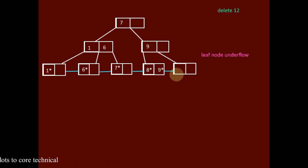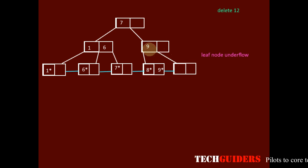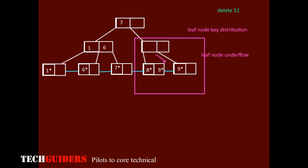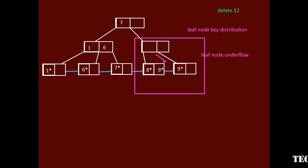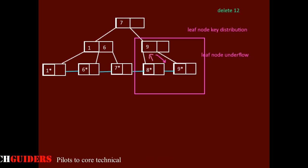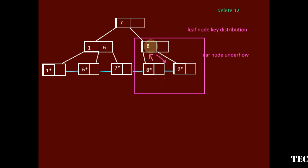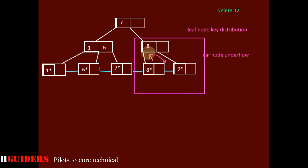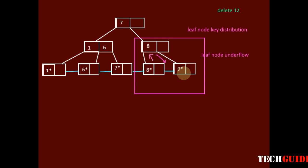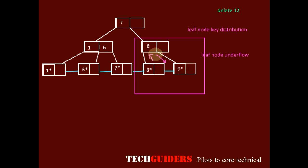This redistribution is done through the parent as a rotation, similar to the case of an internal node. We have deleted 12 and there is underflow on this node. Key 9 from the parent will come down, but here we need the key along with its data pointer, and 9 will go up. Finally, a proper separator key is placed — the separator key should be 8. The underflow node borrowed a key from its sibling and a proper separator key is placed on the parent. All keys got redistributed so that every node has at least the minimum number of keys required.